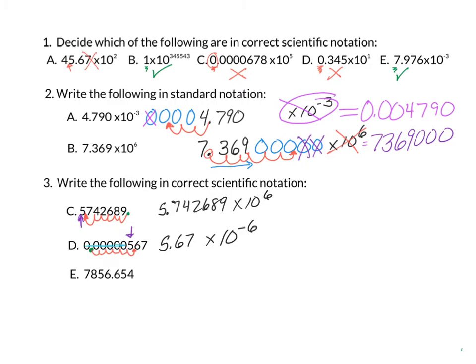Pause the video while you try part E. For this one, I know I'm going to get a positive number in the exponent because this number is larger than 1, so we're going to go back from the decimal place — back 1, 2, 3 — so that only the 7 is in front of the decimal. And that means our answer will be 7.856654 times 10 to the power of 3.